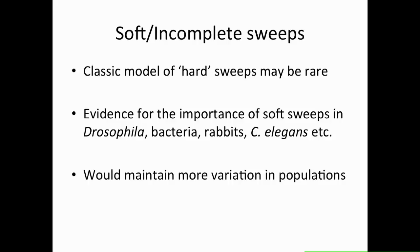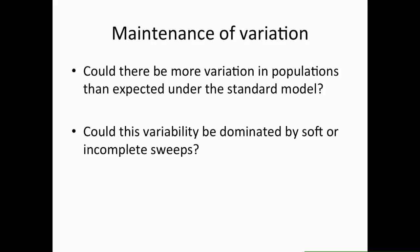There's a lot of evidence for the importance of soft sweeps, and more all the time — from Drosophila, bacteria, rabbits, and C. elegans. Soft or incomplete sweeps would also maintain more variation in populations than hard sweeps. So we wanted to know if, when we sampled from a large population, we would find more variation than expected, and if this variation seemed to be impacted by soft or incomplete sweeps.